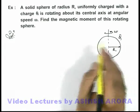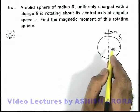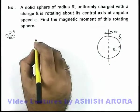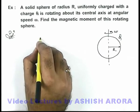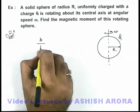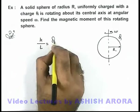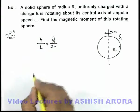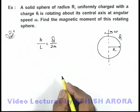Then as being a symmetric object uniformly dense and uniformly charged, we can make use of the relation that for any object the ratio of magnetic moment to the angular momentum is a constant which is Q by 2m, if m is considered to be the mass of this sphere.